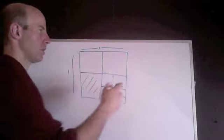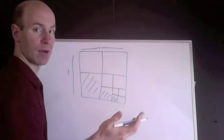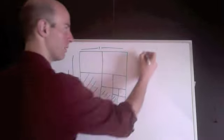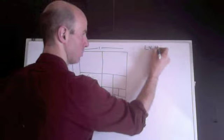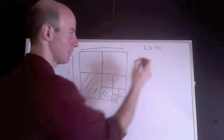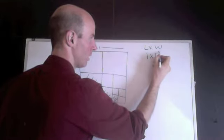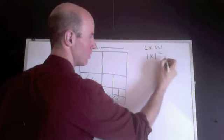Well, that would be, I know the area formula for a box, a square, pardon me, that's length times width. Length times width, and for a square, since the sides are the same, I'm just going to do 1 times 1, or 1.